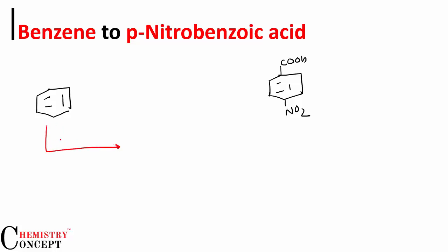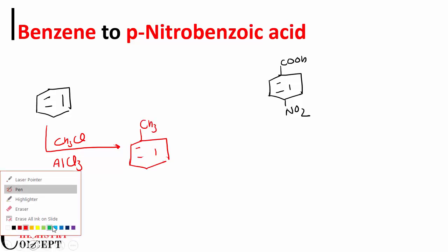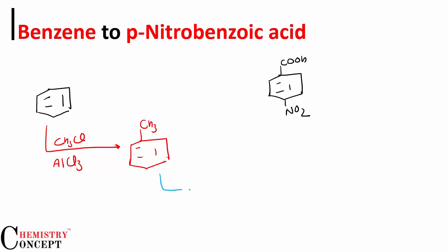Let's react benzene first with CH3Cl in the presence of anhydrous AlCl3. Yes, we are doing Friedel-Crafts alkylation. We introduced a methyl group over the benzene, which is now ortho-para directing.